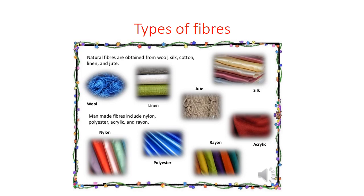Silk is obtained from the silk moth. The cocoon of the silk moth produces the silk thread. These are the natural types of fibers. Now there is another type of fiber called artificial or synthetic fibers. Artificial or man-made fibers are made in factories and are prepared from chemicals. These man-made materials include nylon, polyester, acrylic, etc.